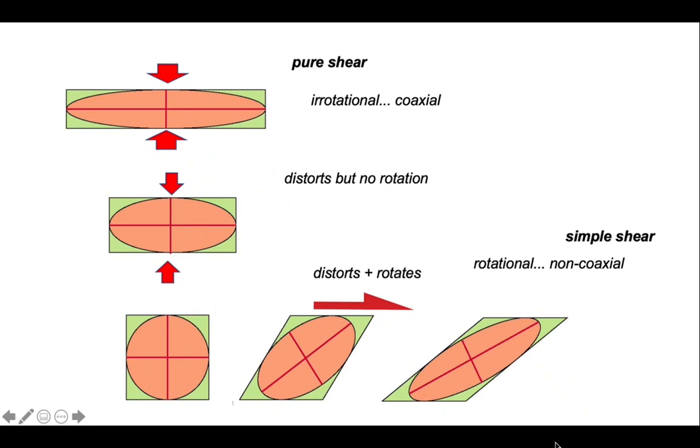Simple shear both distorts the ellipse and rotates it towards the shear plane. Both generate strain ellipses but they do so by different strain paths and they imply different kinematics.